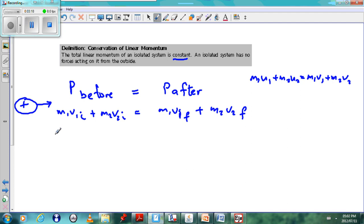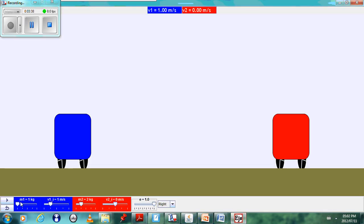Let's just write that down. The mass of our blue car is 1 kilogram, and the velocity of the blue car is 1 meter per second. The mass of the red car is 2 kilograms, and the velocity is 0 meters per second. Mass of blue car 1 kilogram, mass of red car 2 kilograms, velocity of blue car 1, velocity of red car 0 at the beginning.